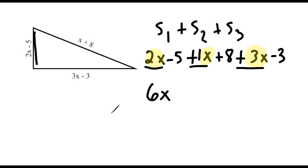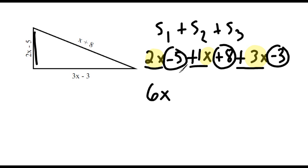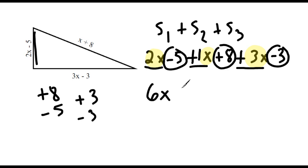Looking at the constants — minus 5, plus 8, and minus 3 — none of those contain a variable, so we call them constants, and all constants are like terms. Starting with positive 8 and subtracting 5 gives us 3; taking that 3 and subtracting another 3 leaves us with 0. So after our 6x, you don't write anything because you do not write plus 0 or minus 0. The expression that represents the perimeter of the triangle is 6x.